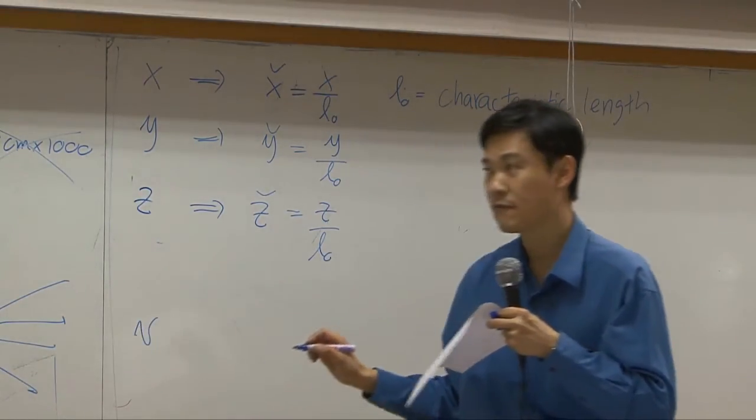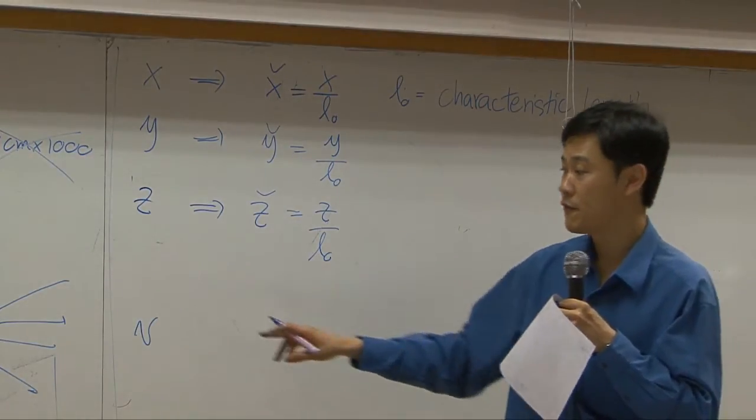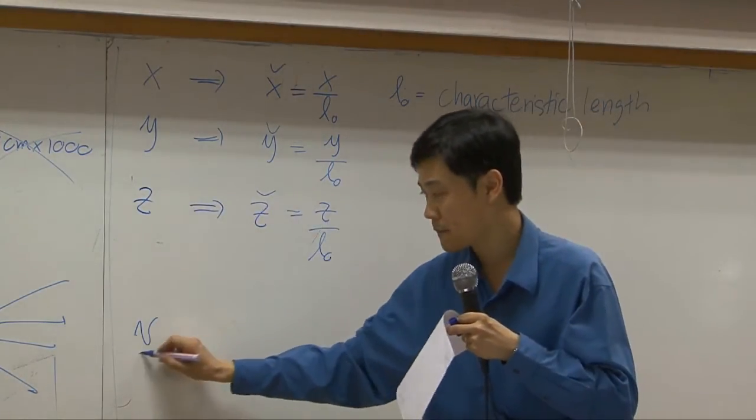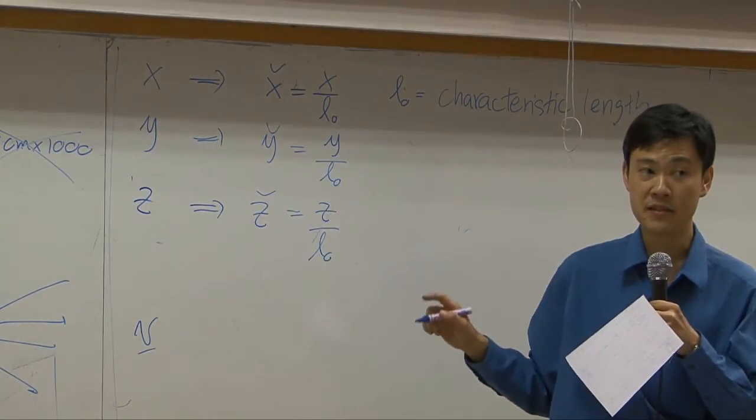Then, what else do we have? What kind of variables do you have? We also have velocity. Velocity has unit of meter per second.